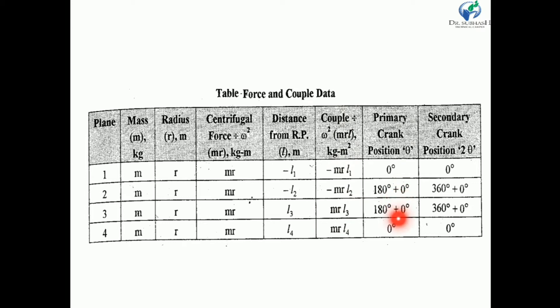Let us consider the primary crank positions. Assuming outer cranks make an angle of 0 degrees with the center line of cylinders, theta is 0. So the primary crank positions are: θ1 = 0°, θ2 = 180°, θ3 = 180°, and θ4 = 0°. For secondary crank positions, which are 2θ: the secondary angles are 0°, 360°, 360°, and 0° — meaning all secondary positions are the same.